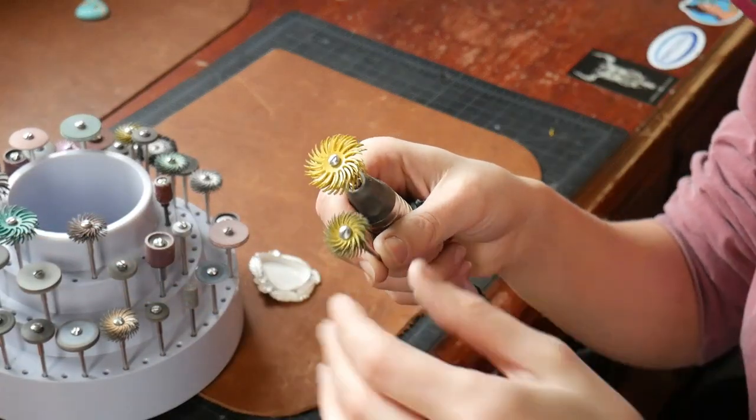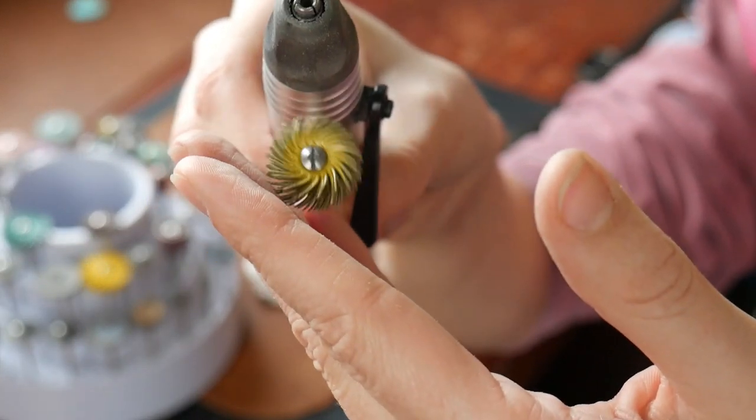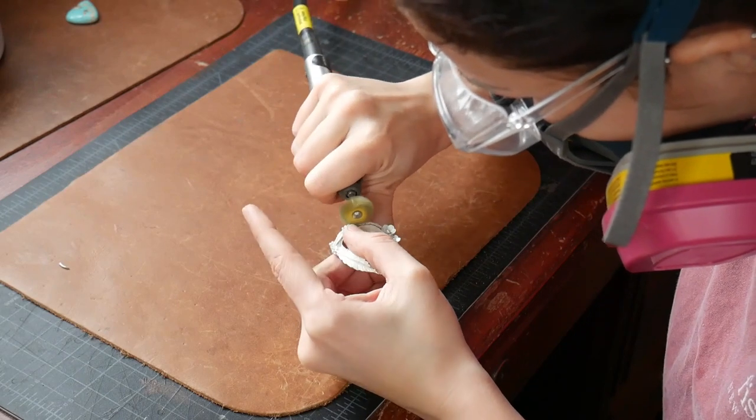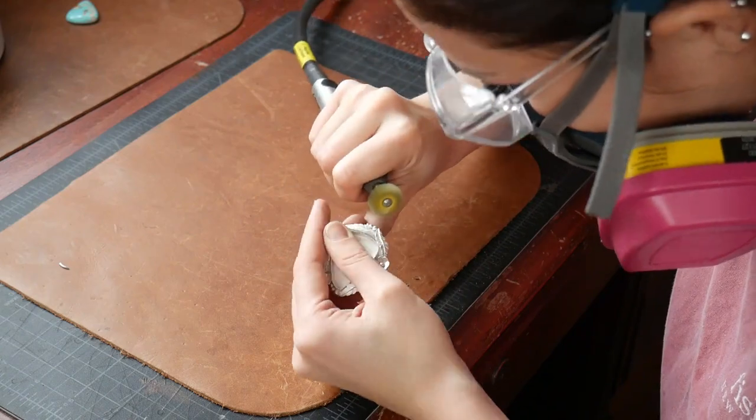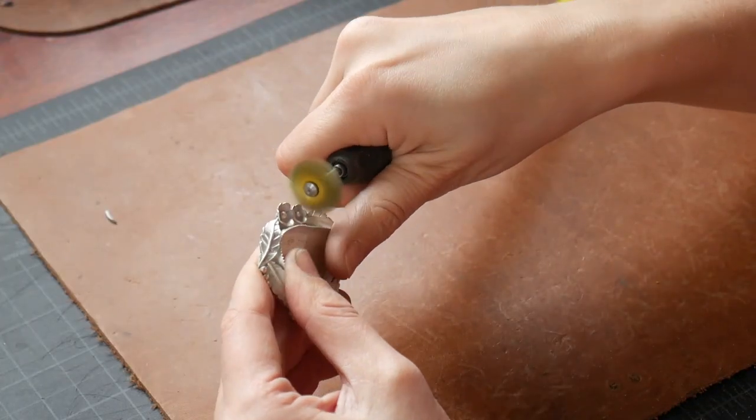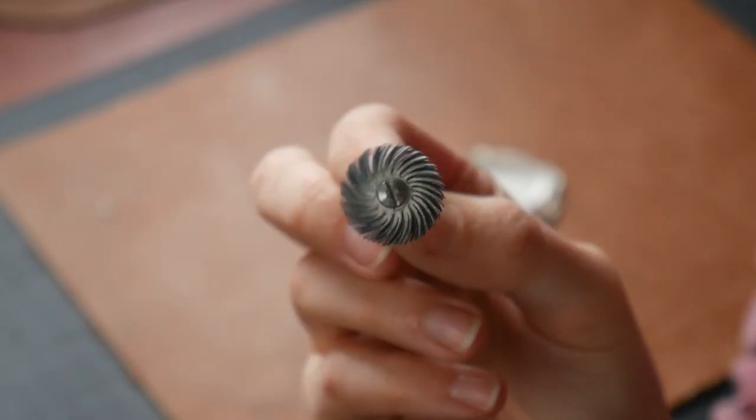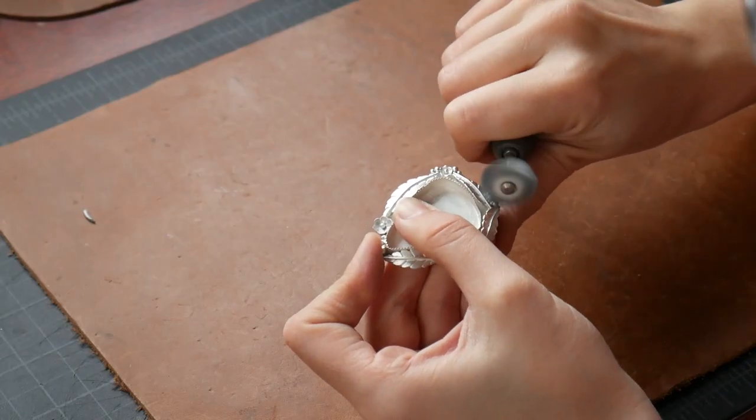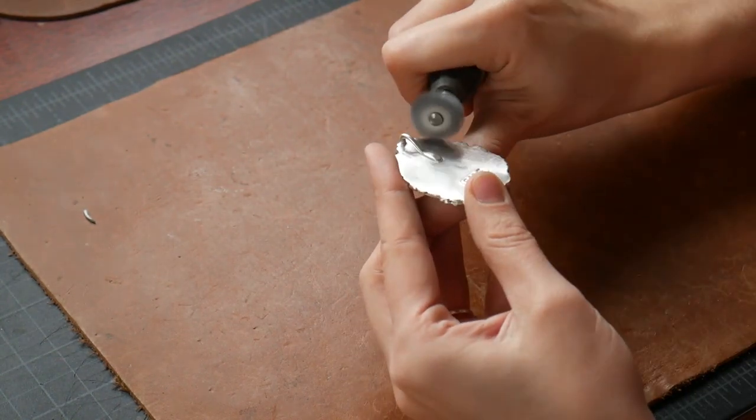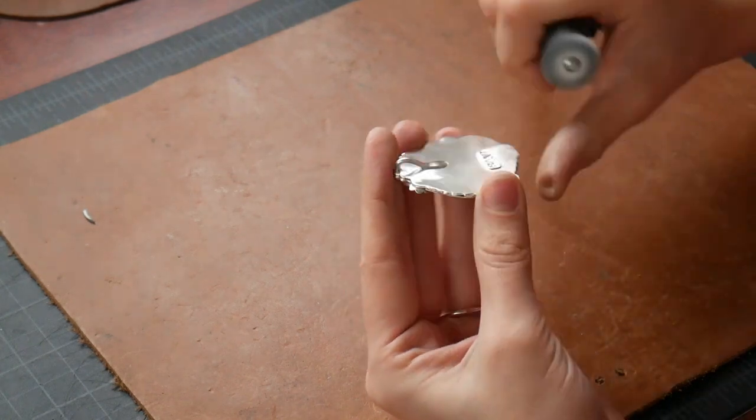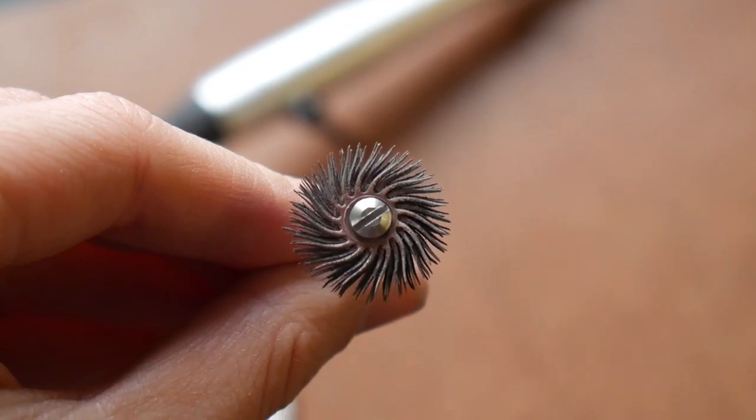Now I am going to be switching to my smaller 3M radial discs. These ones are 3/4 of an inch and I am going to be using these to polish my entire piece. Now these wheels come in numerous different grits and each grit has a different color. I have found that I get the best results when I go in order using all of the grits. I start with my yellow disc and then I go to my white and then my red and then my blue and then my pink and then my peach and then I finish with my light green wheel.